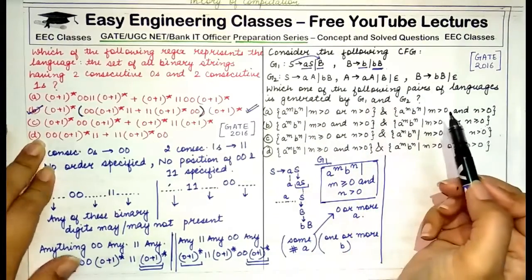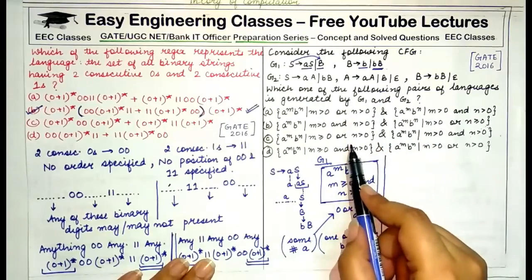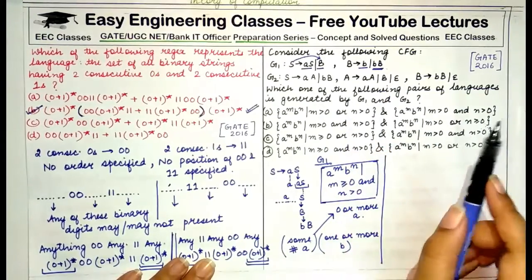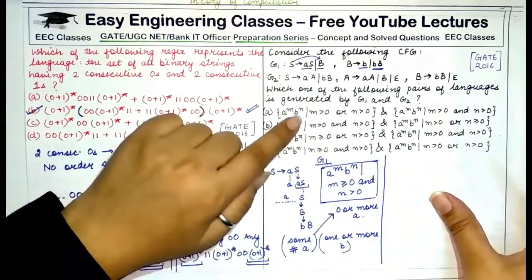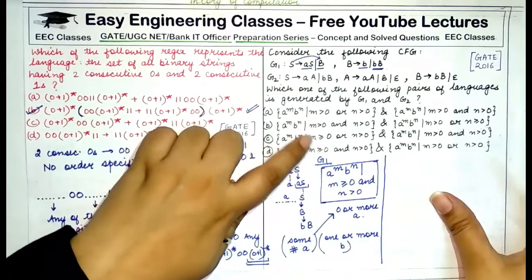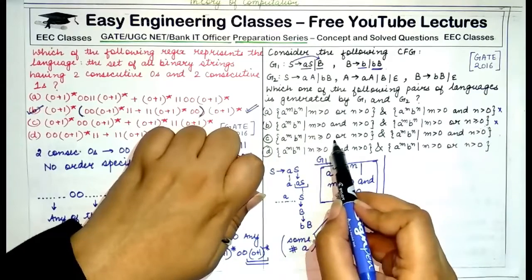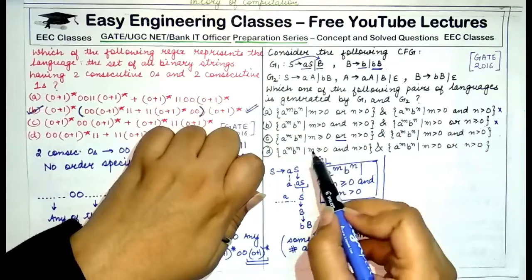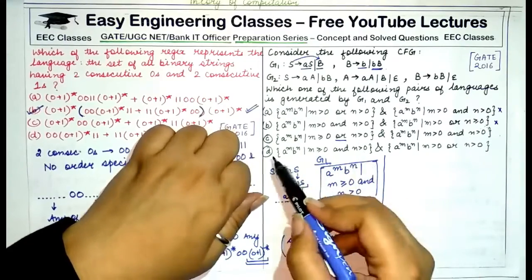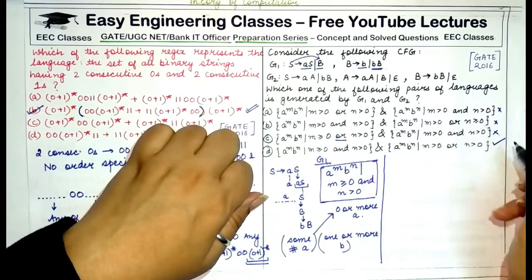In the exam, once you find G1's language (A^m B^n, m ≥ 0, n > 0), you can eliminate options. Options requiring m > 0 are eliminated since m ≥ 0 is needed. Options with an 'OR' condition between M and N are also eliminated, since both conditions must be satisfied simultaneously. This leaves only option D.